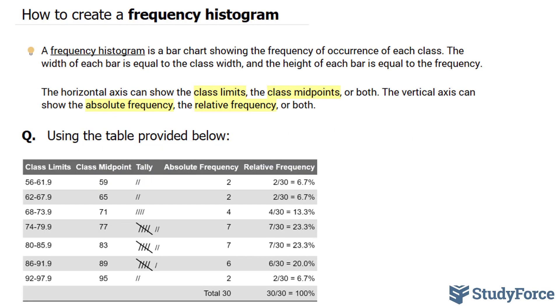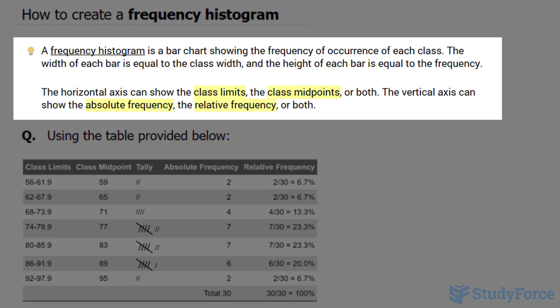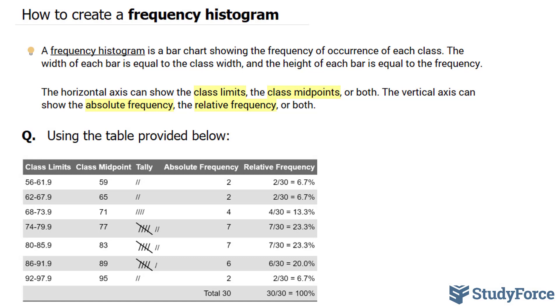In this video, I'll show you how to create a frequency histogram. A frequency histogram is a bar chart showing the frequency of occurrence of each class. The width of each bar is equal to the class width, and the height of each bar is equal to the frequency. The horizontal axis can show the class limits, the class midpoints, or both.